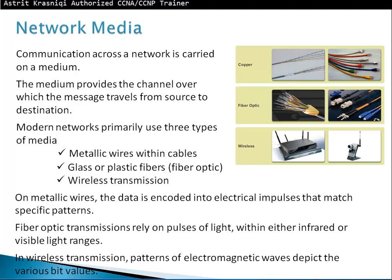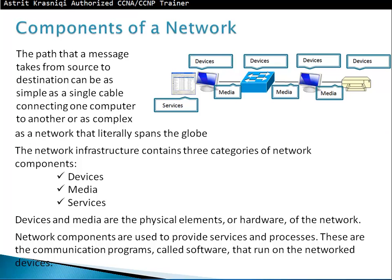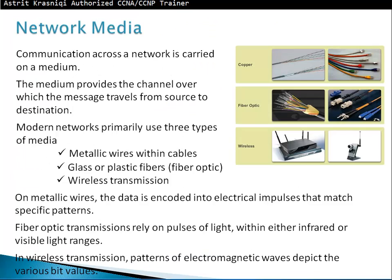To summarize, we have two types of devices: end devices and intermediary devices. Then we have media — three types: metallic wire (copper), glass or plastic fiber (fiber optic), and wireless transmission. Data on metallic wires is encoded as electrical impulses. Fiber optic uses pulses of infrared or visible light. Wireless uses patterns of electromagnetic waves to depict bit values.